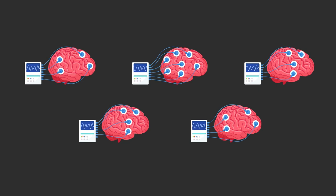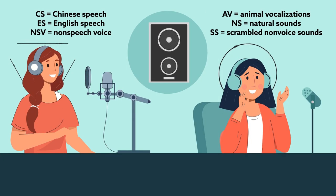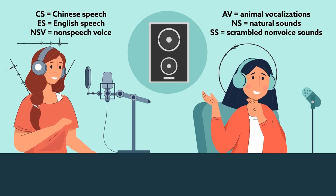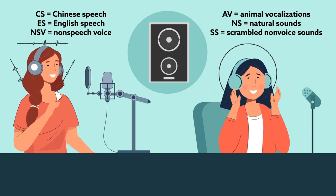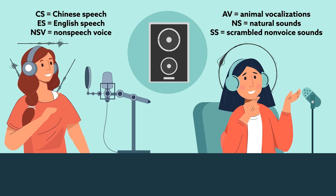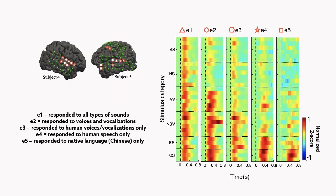They used these electrodes to study brain activity in response to various types of sounds, including voices of Chinese and English speakers. Electrodes in some brain areas responded significantly to the sounds, and the response patterns fell into five main categories with different degrees of voice specificity.